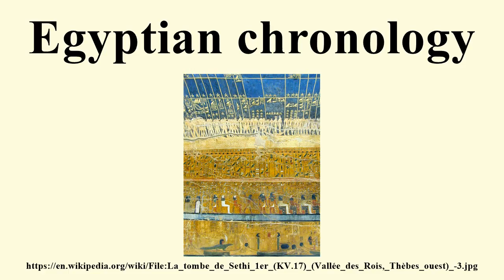The Thera eruption is a famous conundrum not just in Egyptian but also in Aegean chronology, as the radiocarbon date for the eruption — between 1627 and 1600 BC — is off by a full century compared to the date traditionally accepted in archaeology of c. 1500 BC. Since 2012, there have been suggestions that the solution lies in adjustment of both dates towards a compromise date in the mid-16th century BC, but as of 2014 the problem had not been satisfactorily resolved.